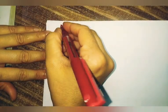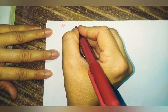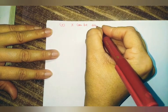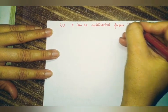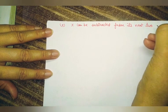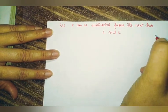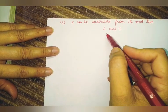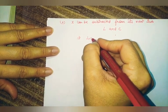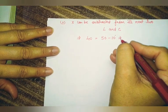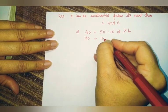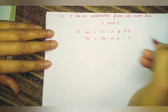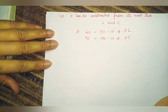The second sub-part of rule two: X can be subtracted from its next two symbols, which are L and C. So X can be subtracted from only L and C. To write 40, that means 50 minus 10, so we write XL. To write 90, that means 100 minus 10, so we write XC — C is the symbol for 100.